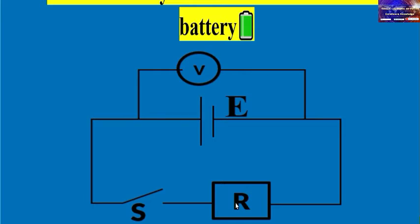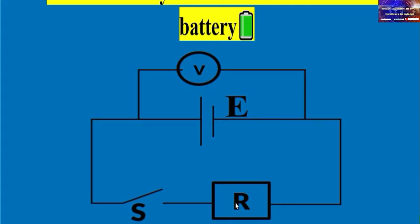You change the resistance using the resistance box and record the value of the voltmeter — the potential difference across the circuit. After recording the results, you derive the equation to see the nature of the graph and answer the questions. In physics experiments, you must know the nature of the graph to get the best fit line and correct answers.